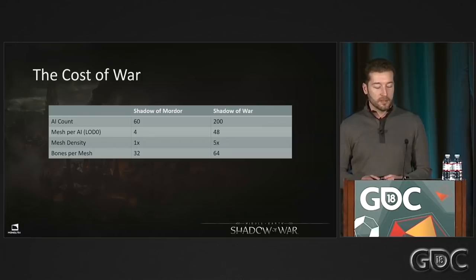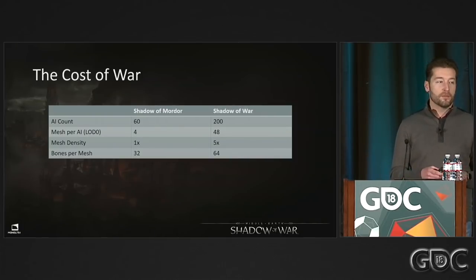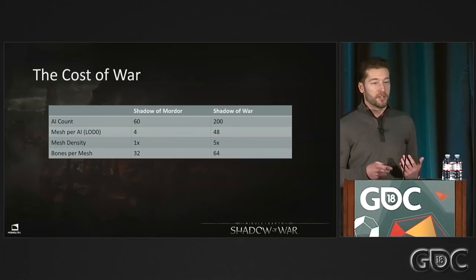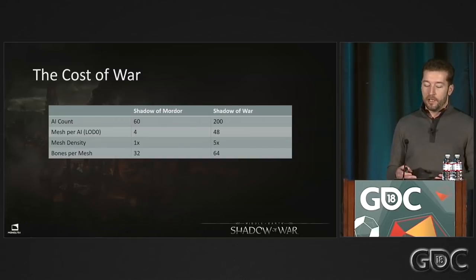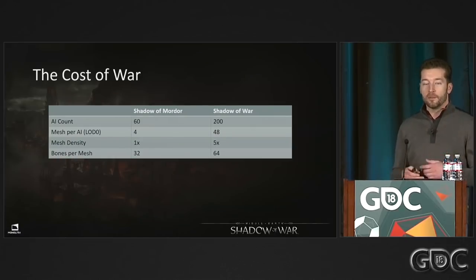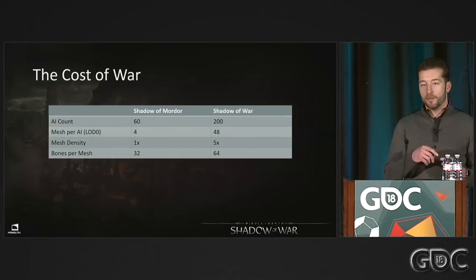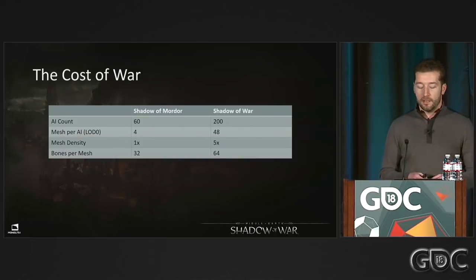Here's a quick comparison between Shadow of Mordor and Shadow of War. We increased AI count by almost 4x. Since we moved exclusively to current-gen consoles with no last-gen version, we increased our highest-LOD mesh counts by almost 12x. Mesh density went up about 5x — on Shadow of Mordor we used tessellation for current-gen, but now we increased mesh density directly. Bone counts also doubled.